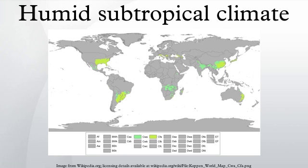In Mexico, there are small areas of CFA and Cwa climates. The climate can be found in small areas scattered around the northeastern part of the country, in proximity to the Gulf of Mexico. Other areas where the climate can be found include the high elevations of the Trans-Mexican Volcanic Belt and Sierra Madre Oriental. Despite being located at higher elevations, these locations have summers that are too warm to qualify as a subtropical highland climate. Guadalajara's climate is a major example of this.